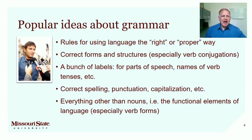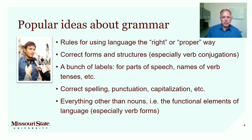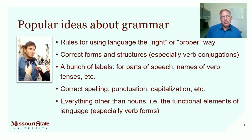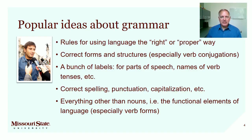If we were to ask the average person on the street what's grammar, I think most people would say those are rules we learn in school for using language the right way — saying things the way we should say them. They might refer to correct forms and correct structures. Especially people think about verb conjugations. Or folks might talk about all those labels you learn: adjectives, adverbs, prepositions, the verb tenses — if they've taken a language class. So you have the present, the past, the imperfect, the preterite, the subjunctive, the indicative. Those labels might be top of mind for them.